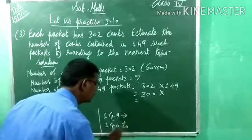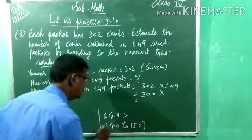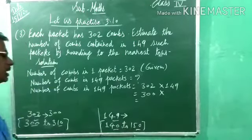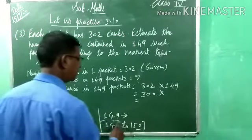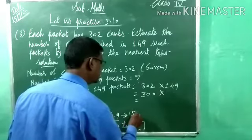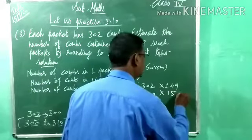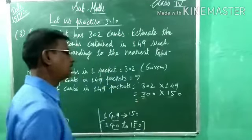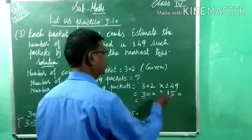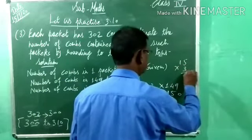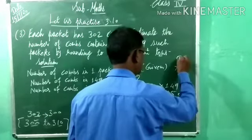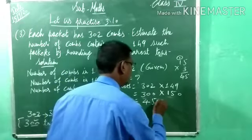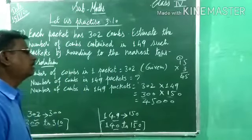Rounding 149 to the nearest 10: 140 plus 10 gives 150. Now 49 — does it get nearer to 40 or 50? 149 gets nearest to 150. So multiply 302 by 150 — that means 3 times 15. 15 threes: 3 fives are 15 carry 1, 3 ones are 3, plus 1 is 4 — so 45. How many zeros? 1, 2, 3 — so put 3 zeros to get 45,000.